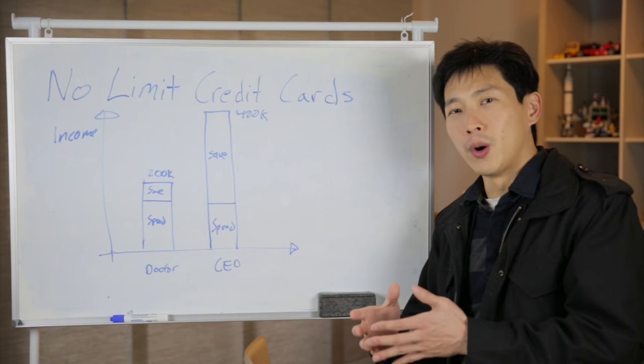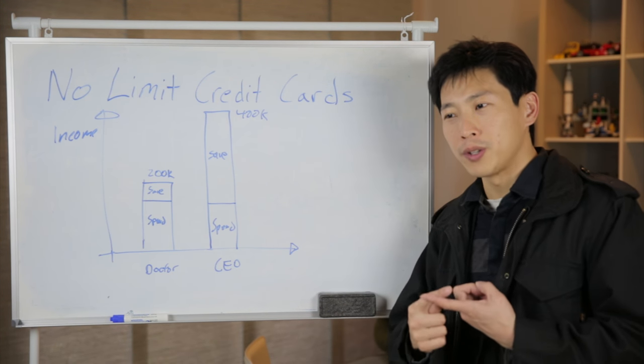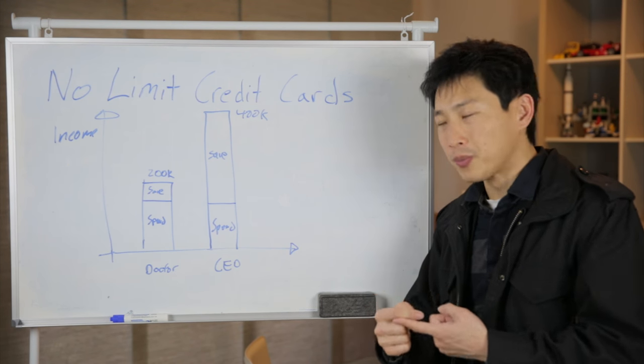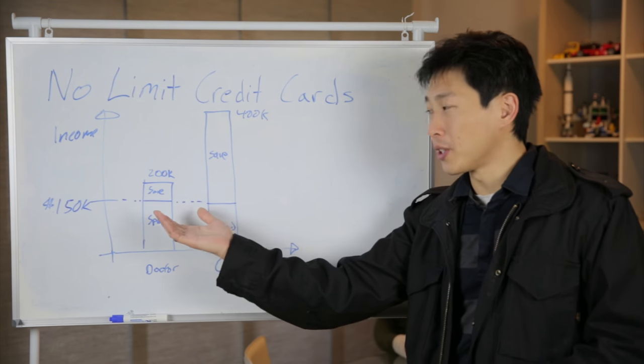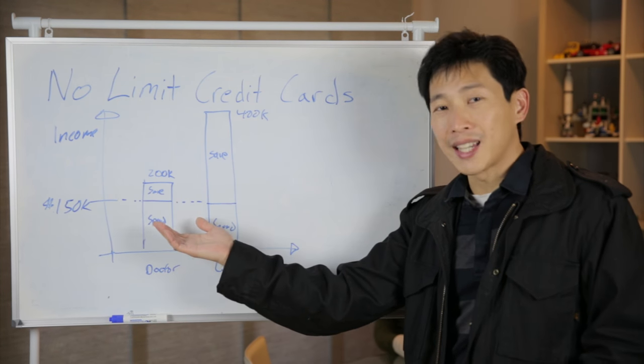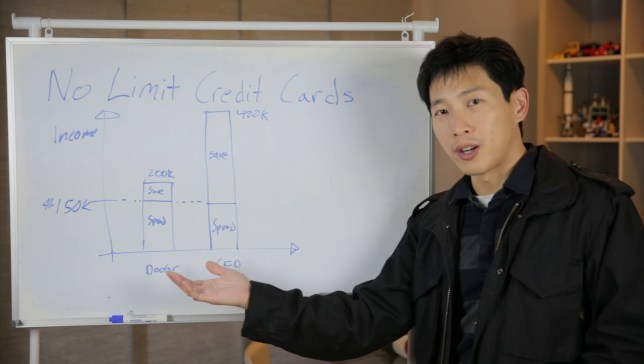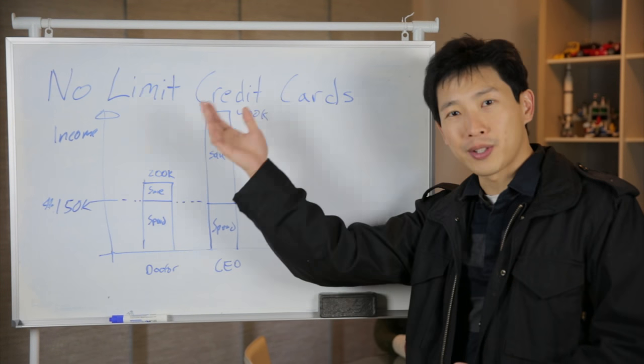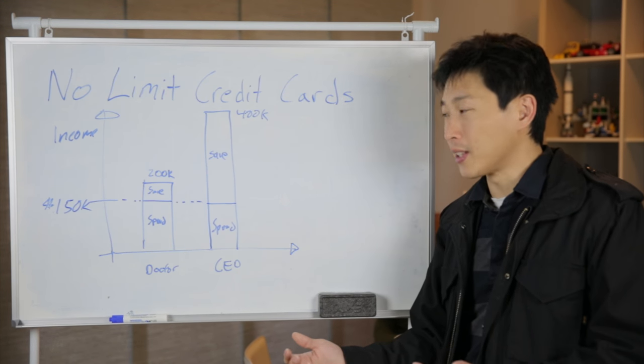But I feel that much of these owners cannot actually afford to use these cards and spend it the way that they actually do. Take, for example, a doctor that makes $200,000 and they spend $150,000 a year on their credit cards. And so because of this high rate of spending, they qualify for some of these no limit black cards and things like that.